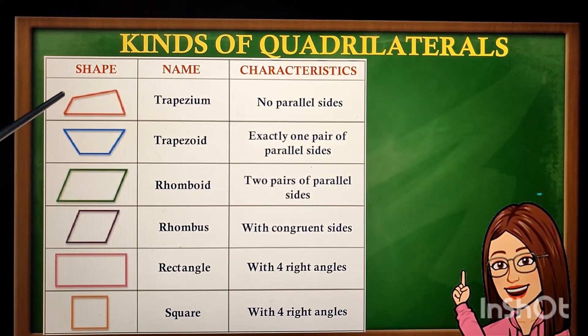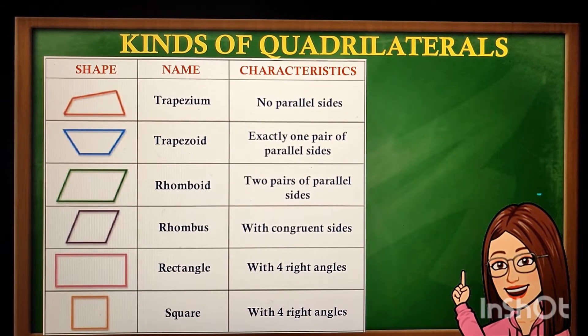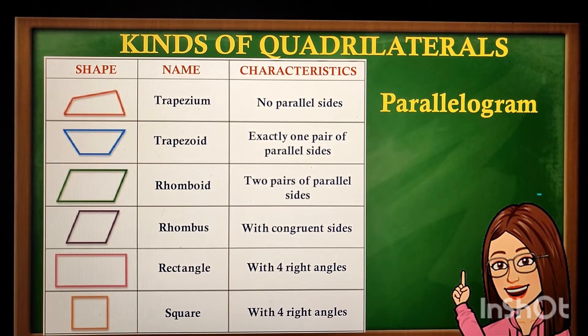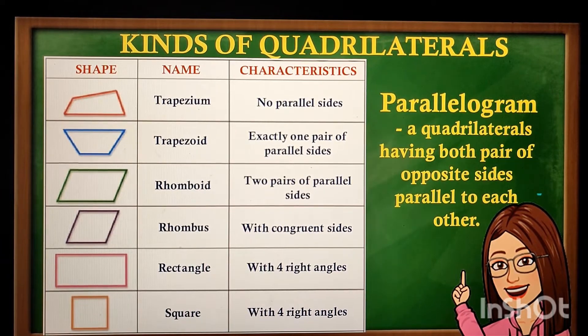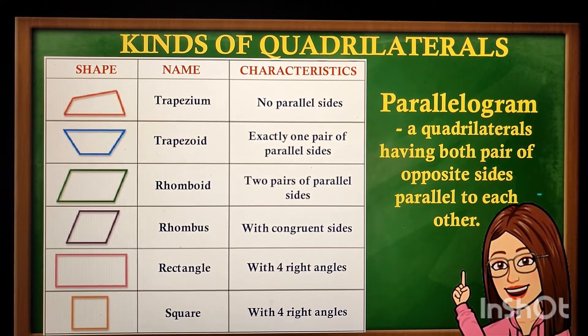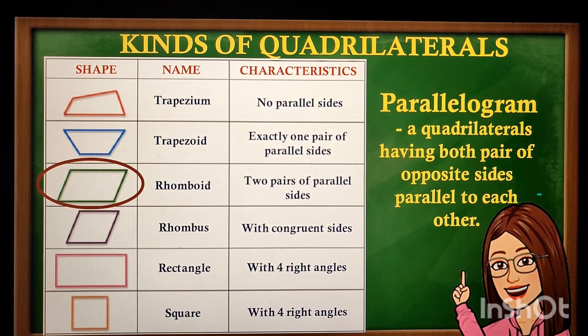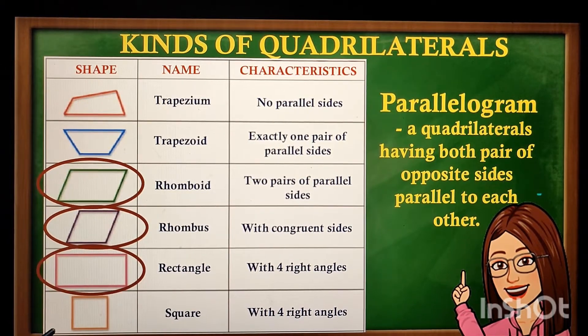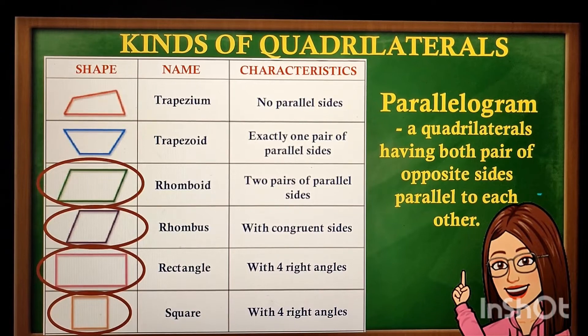Among the six quadrilaterals, what are those that you can consider as a parallelogram? When you say parallelogram, it is a quadrilateral having both pairs of opposite sides parallel to each other. If your answer are rhomboid, rhombus, rectangle, and square, you are absolutely correct.